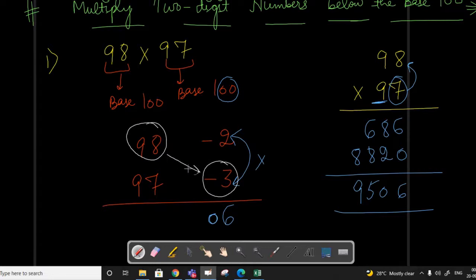Now what we have to do is add or solve 98 and negative 3 diagonally. So 98 minus 3 is 95, or we can solve 97 minus 2, which is also 95. But we have to solve only one way, not both. So the answer is 9506.